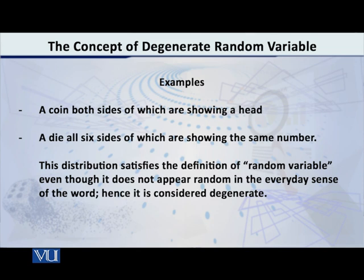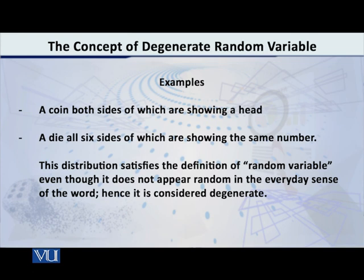Why? Isliye ke woh height jo hai, woh probability ko denote karegi na? To woh, agar one hai, toh iska kya matlab hai? The probability is one that you will get three if you toss this particular die. Probability one hone ka kya matlab hai? Don't you know that one is the probability of a sure event? Cent per cent, hundred over hundred — one. So yeh sure hai na ji. Agar uske har taraf three hi dots hain, it is a sure event that you're going to get a three.